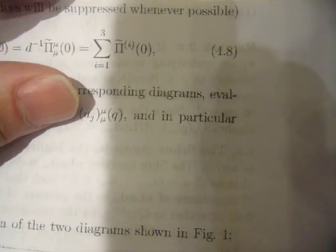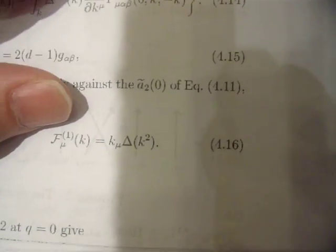One of those was to work in d dimensions. Let's use the epsilon expansion. Let's imagine we live in a space-time dimensionality which is actually away from an integer. Then we can use epsilon as a small control parameter, and then the fixed point will be of order epsilon.